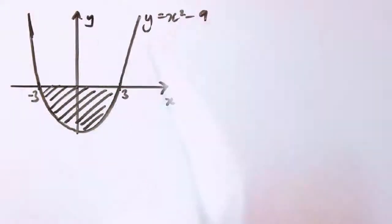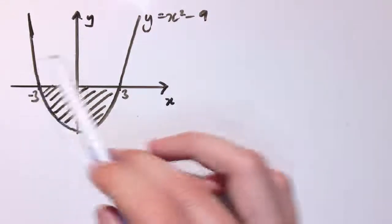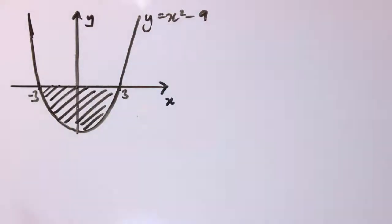Okay, so we've seen that integration will give us the area between a curve and the x-axis, and we've got to adjust our method very slightly when some of the area lies below the x-axis, as it does here. All the examples I've looked at so far, the area has been above the x-axis.